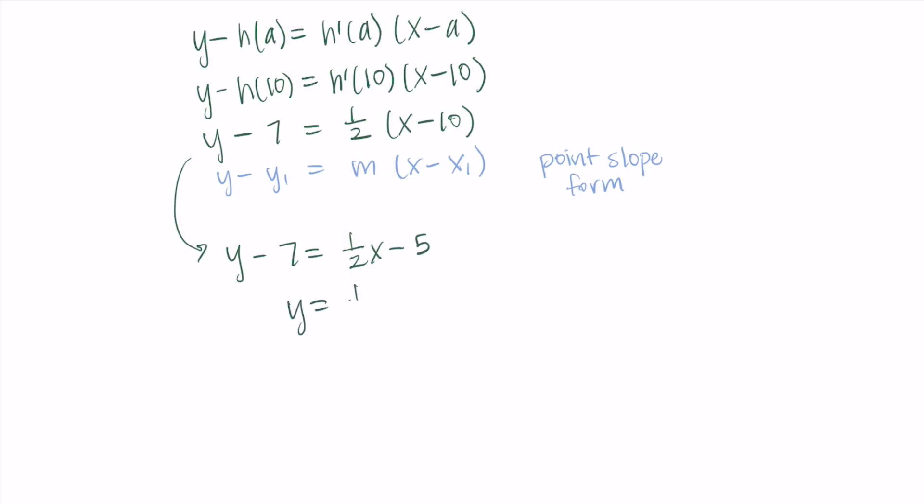Then I will just add the 7 over to the other side, so I have 1/2x - 5 + 7. The -5 and +7 go together to be 2, and I am left with my final version of the equation. I have y = 1/2x + 2. And remember, this is the equation of the tangent line to the function h at x = 10.